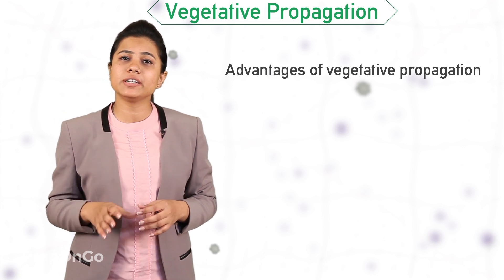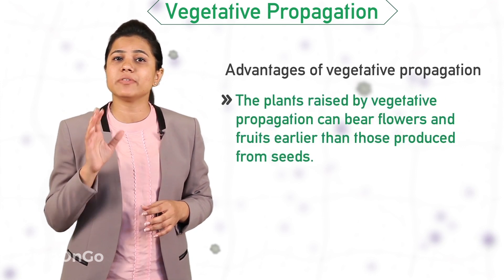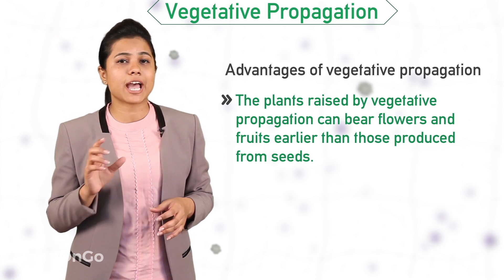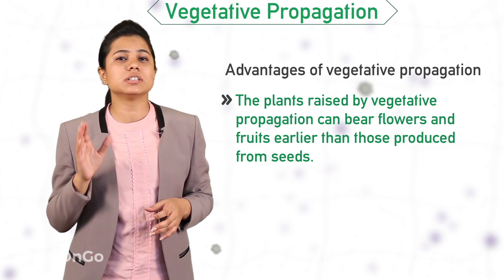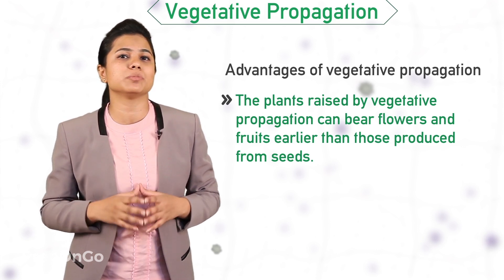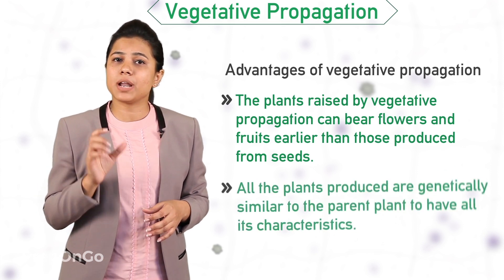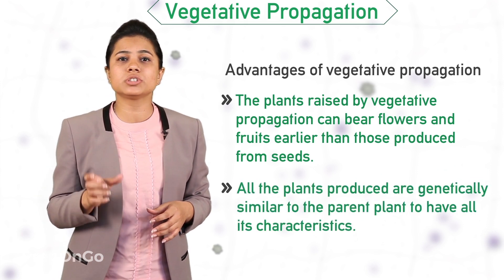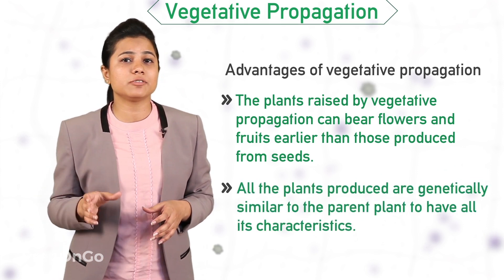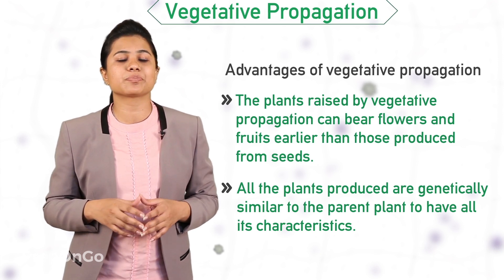There are mainly two advantages of vegetative propagation. The first is that plants raised by vegetative propagation can bear fruits and flowers earlier than those produced from seeds. The second advantage is that the plants produced are genetically similar to the parent plant and have all its characteristics.